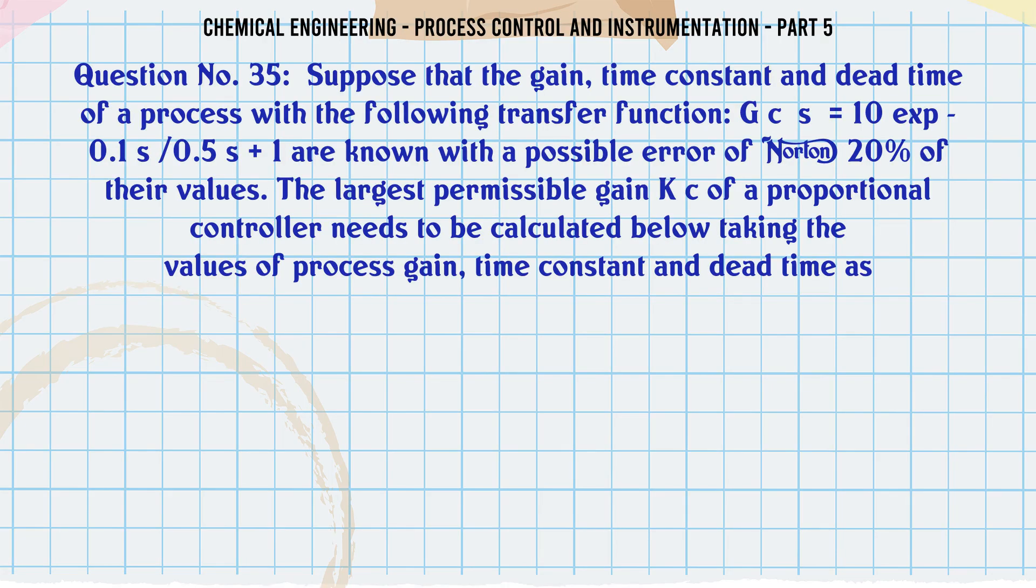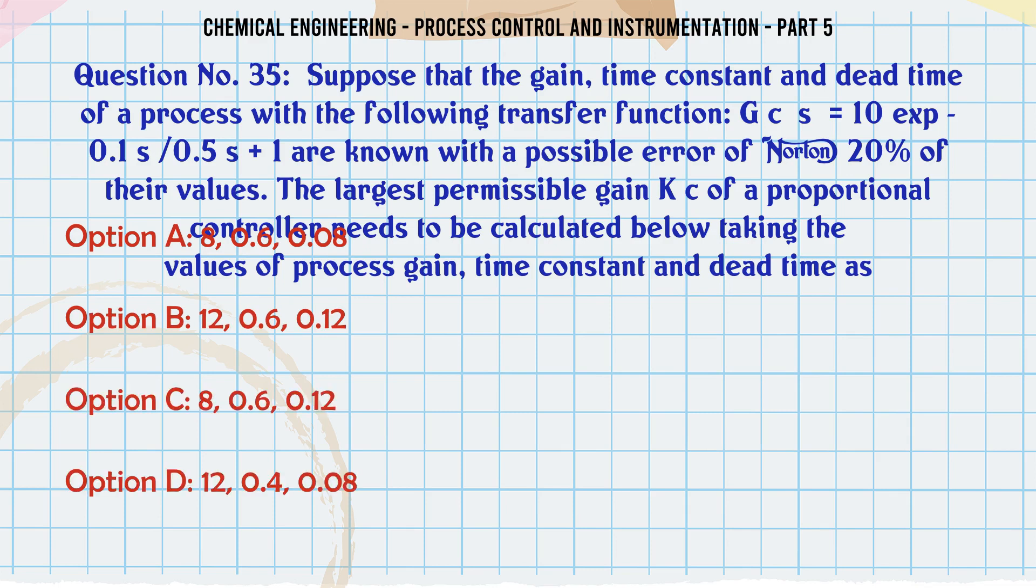Suppose that the gain, time constant, and dead time of a process with the following transfer function G_c(s) = 10e^(-0.1s)/(0.5s+1) are known with a possible error of ±20% of their values. The largest permissible gain K_c of a proportional controller needs to be calculated below taking the values of process gain, time constant, and dead time as: A. 8, 0.6, 0.08. B. 12, 0.6, 0.12. C. 8, 0.6, 0.12. D. 12, 0.4, 0.08. The correct answer is 12, 0.6, 0.12.